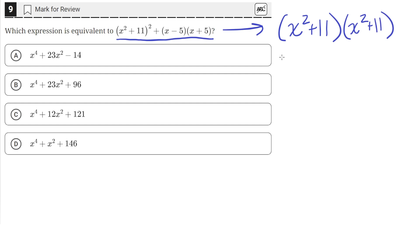So we can simplify that down to x to the fourth. We'll just multiply this term with both of these, and then this term with both of these, and add all those together.